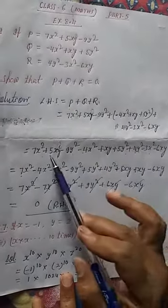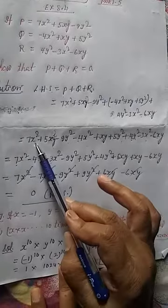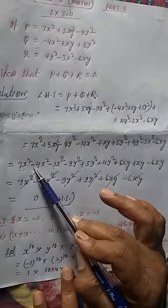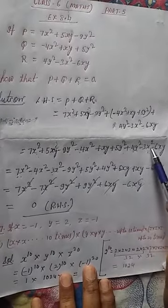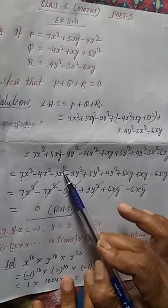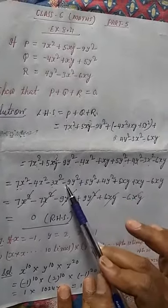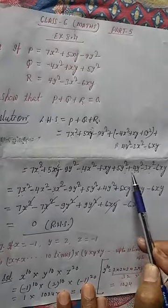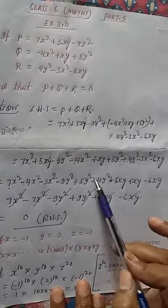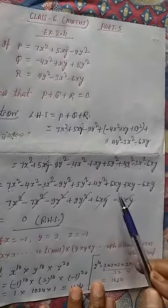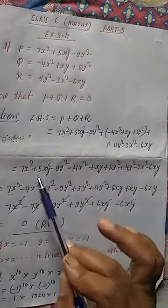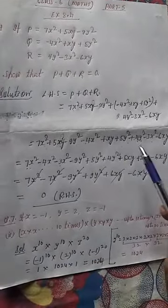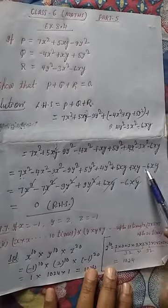After putting the values, we arrange by degree and by like terms. So we write 7x squared as it is, 5xy as it is, minus 9y squared as it is. Then plus into minus gives minus 4x squared, plus xy, plus 5y squared. Then plus 4y squared, minus 3x squared, minus 6xy. Now grouping like terms: x squared terms are 7x squared, minus 4x squared, minus 3x squared. Then y squared terms: minus 9y squared, plus 5y squared, plus 4y squared. Then xy terms: 5xy, plus xy, minus 6xy.